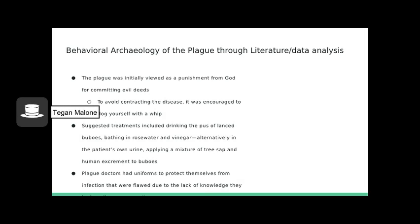The plague struck during medieval times when the church was the most powerful and richest institution. The plague was initially viewed as punishment from God for committing evil deeds. To avoid contracting the disease, it was encouraged to flog yourself with a whip. Suggested treatments included drinking the pus of lanced buboes, bathing in rose water and vinegar, or alternatively in the patient's own urine, and applying a mixture of tree sap and human excrement to buboes.